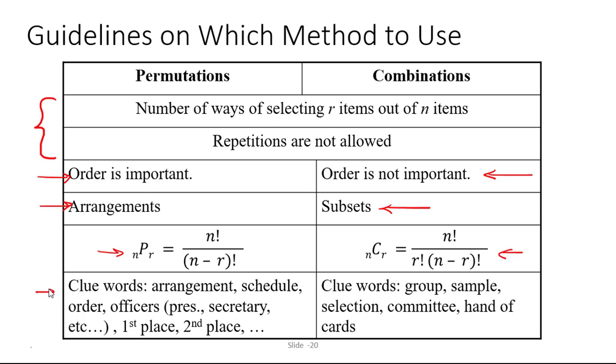But probably the most important thing is the clue words that are going to tell you whether you have a permutation or a combination. Arrangement, schedule, order are all words that are clue words that you'll see in permutation problems. Also anytime you have categories, for example if you're voting on officers for a club and we're going to select three people one to serve as president one to serve as secretary and one to serve as treasurer then the order matters. It's different to select John as the president versus John as the treasurer. Same thing for when you have first place, second place, third place, and so on. Anytime there is a category or distinct prizes then it matters who gets what. You have a permutation as long as the other conditions are also met.